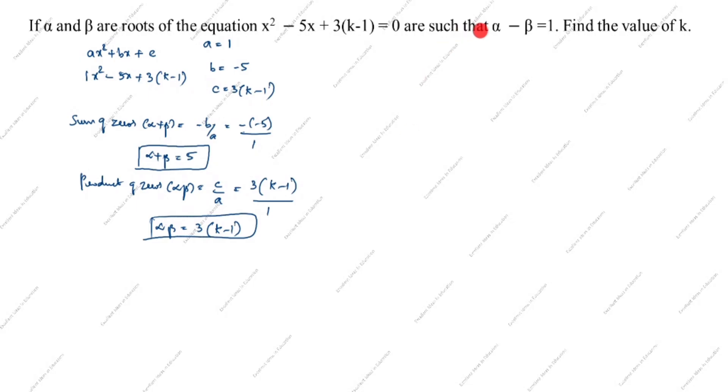You see in this question alpha minus beta equals 1. This is the first equation. This is the second equation. So what is given? Alpha minus beta equals 1, alpha plus beta equals 5. So this and this cancel. 2 alpha equals 6. Alpha equals 6 divided by 2 equals 3. Alpha equals 3.